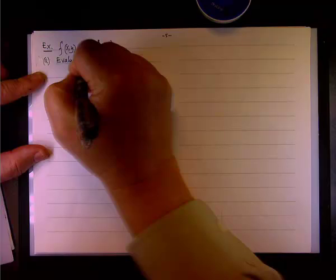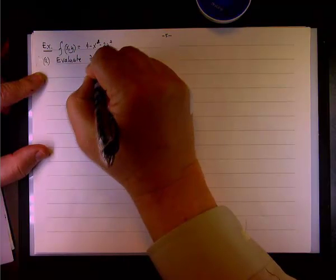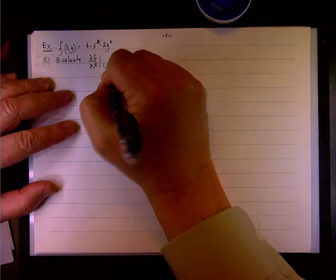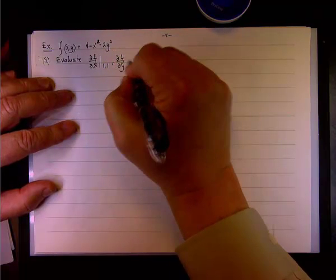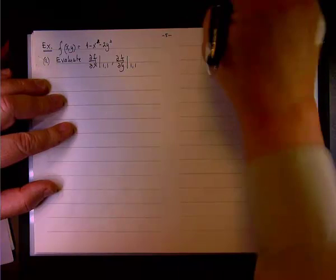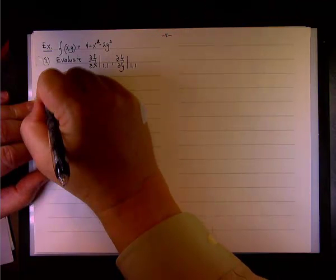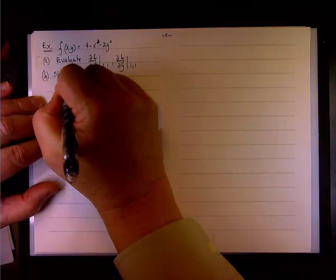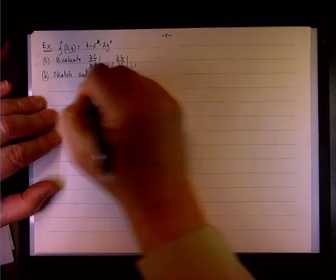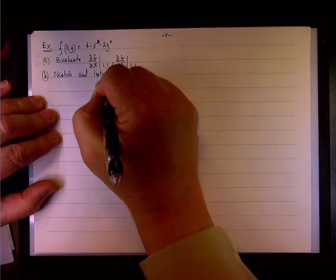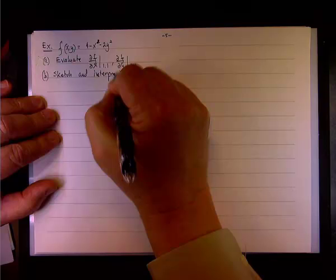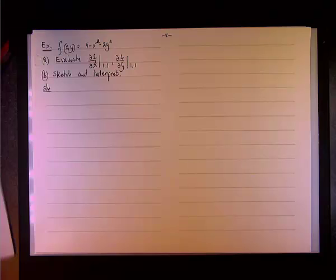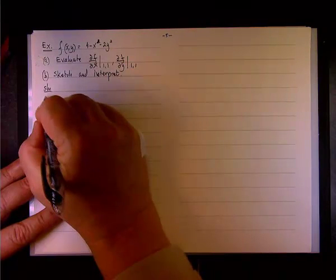So part A, evaluate ∂f/∂x at (1,1) and ∂f/∂y at (1,1). That's nothing to it. But this is the interpretation: sketch and interpret. So this part B will be the challenge.